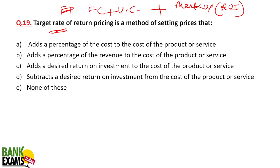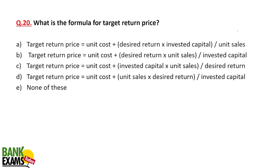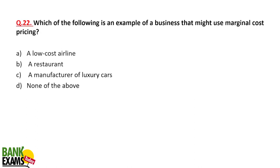The target rate of return pricing adds a desirable return on investment to the cost of the product or service. The formula is: Target Rate of Return Price = Unit Cost + (Desired Rate × Invested Capital) ÷ Unit Sales. Unit cost includes both variable and fixed costs.